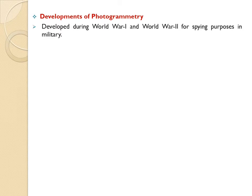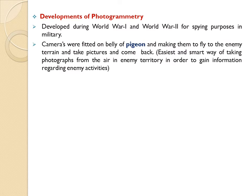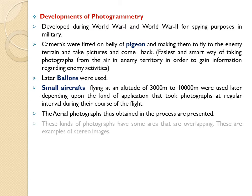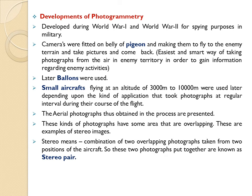Photogrammetry was developed during World War One and World War Two for spying purposes in enemy countries. Initially, cameras were fitted on the belly of pigeons, making them fly to enemy terrain to take pictures and return — the easiest and smartest way of taking aerial photographs. Later, pigeons were replaced by balloons. Smart aircraft flying at altitudes of 3,000m to 10,000m were later used, taking photographs at regular intervals during their course of flight. The aerial photographs thus obtained had overlapping areas, and these overlapping images are examples of stereo images. Stereo means a combination of two overlapping photographs taken from two positions of the aircraft, and these two photographs together are known as a stereo pair.